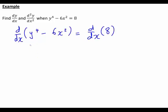That's then going to become, on the left, y to the 4, that will differentiate to 4y cubed times dy dx. Since we're differentiating a function of y with respect to x. 6x squared, that will just become 12x. And the derivative with respect to x of 8 is just going to be 0.